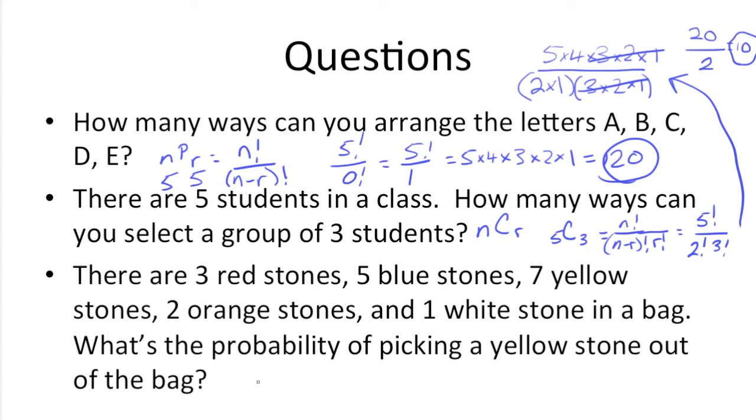We have 3 plus 5, which is 8, plus 7, which is 15, plus 2, which is 17, plus 1, which is 18. So we have 18 total stones. Put that at the bottom of a fraction. All we need to do is figure out what outcome we're looking for. In this case, we're looking for a yellow stone. There's 7 yellow stones. So the probability of picking one out would be 7 over 18.